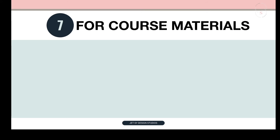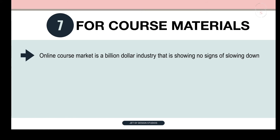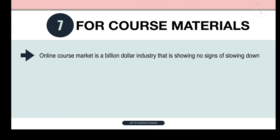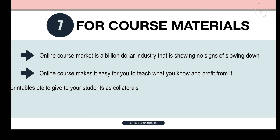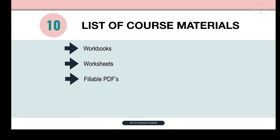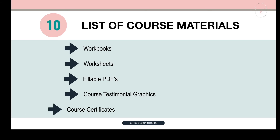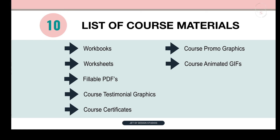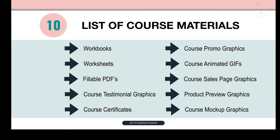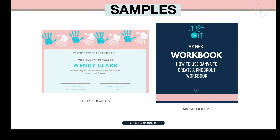Next: use Canva to design course materials. Online courses are very popular nowadays, and the online course market is a billion-dollar industry showing no signs of slowing down. You can create worksheets, workbooks, printables, etc. to give to your students as collaterals. Here's a list of collaterals you can make with Canva: workbooks, worksheets, fillable PDFs, course testimonial graphics, course certificates, course promo graphics, course animated GIFs, course sales page graphics, product preview graphics, and course mock-up graphics. Here's an example — a certificate and a workbook.